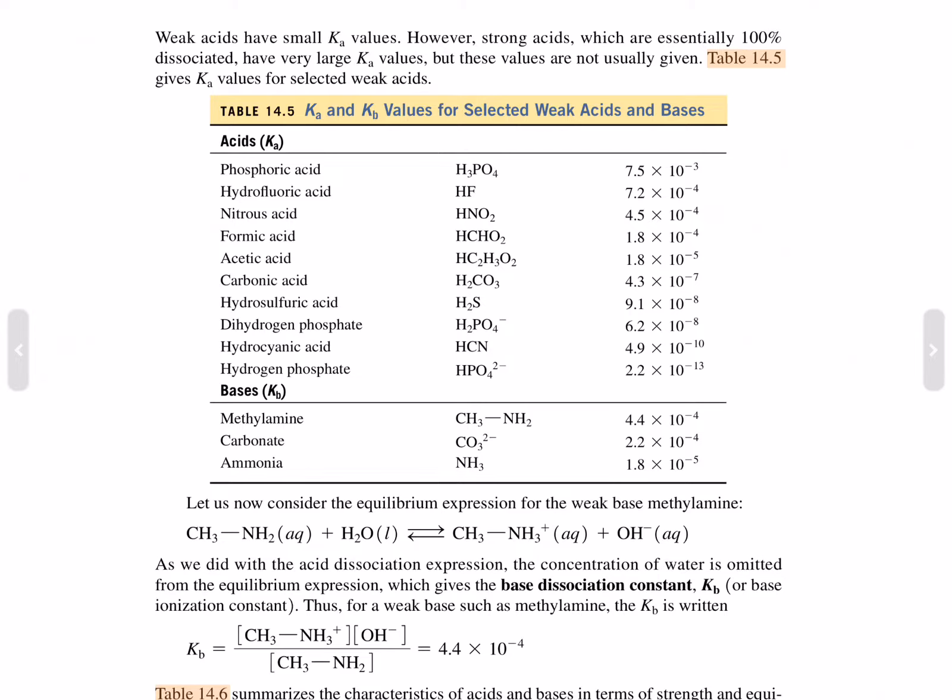Weak acids have small K sub A values. However, strong acids, which are essentially 100% dissociated, have very large K sub A values, but these values are usually not given.